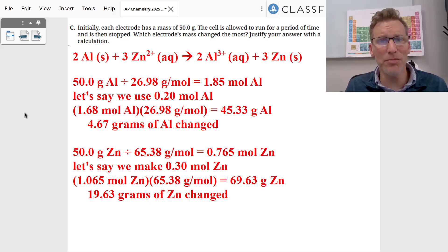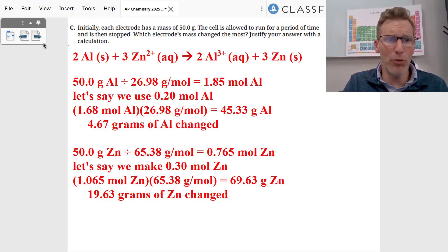The zinc changes more. We're producing more moles, and the zinc is 65 grams for every one mole. So we're making more. That changes the mass more.